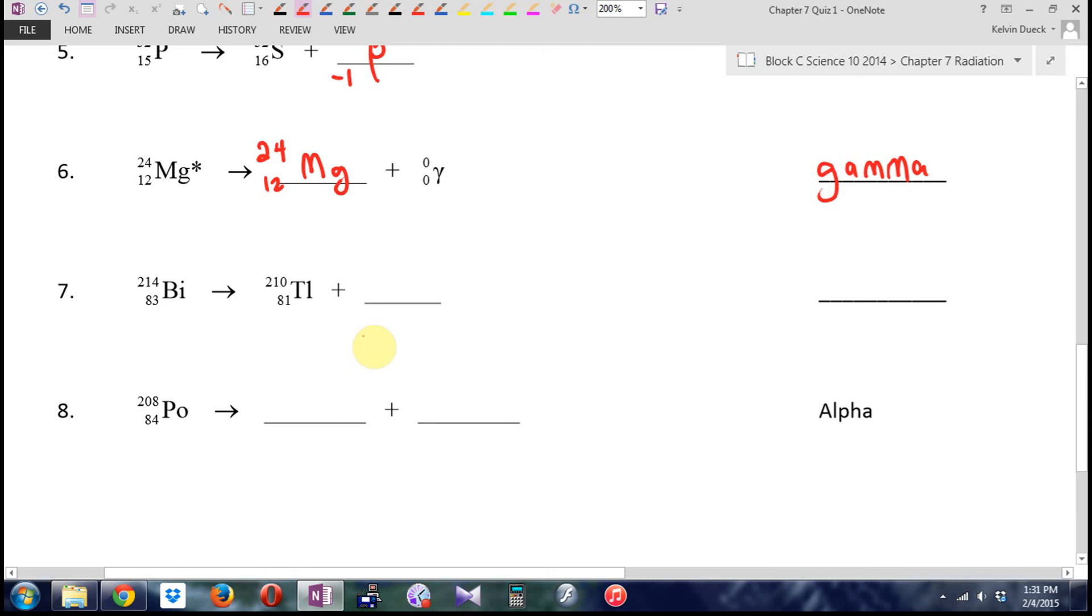Bismuth, element number 83. Bismuth 214 decays into... Well, it must have a mass of four, so I still add to 214, and it better have two protons. You know what? That's an alpha particle.